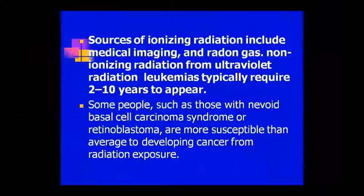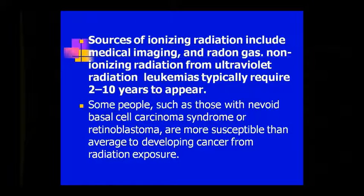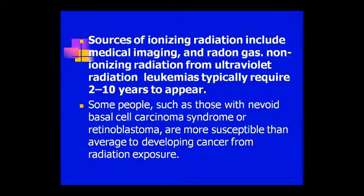In some people there is a Nevoid Basal Cell Carcinoma Syndrome or Retinoblastoma, making them very susceptible to cancer. When there is radiation exposure in such individuals, cancer is caused, and the chances increase within the basal cells and retina. So these are all the etiological agents we have studied today. That is enough for today; we will study other things in the next class. If you have any doubt, you can ask me. Thank you.